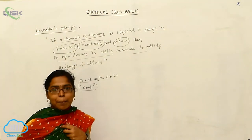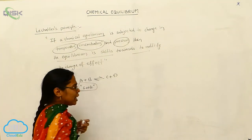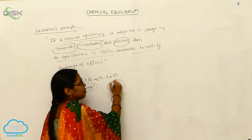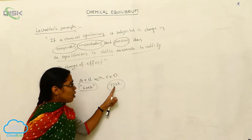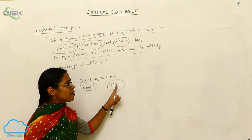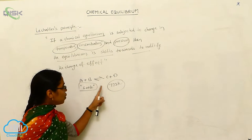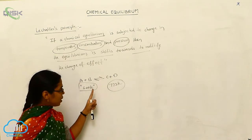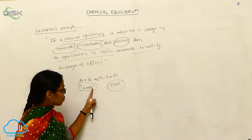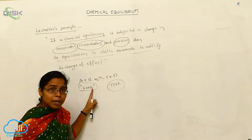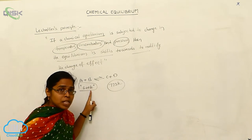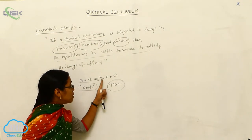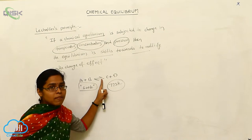Now I want to change the temperature. Here I am changing the temperature to 773 Kelvin. How much is 773 Kelvin? That equilibrium also changes. Because we changed the temperature. Whenever we are changing the temperature, compulsory the equilibrium also changes.